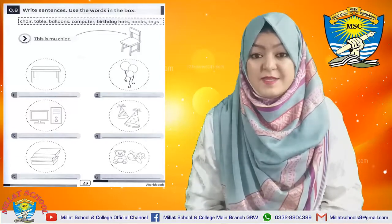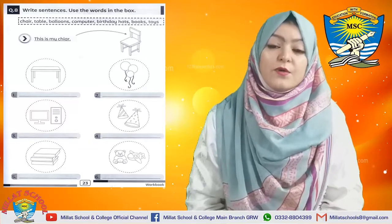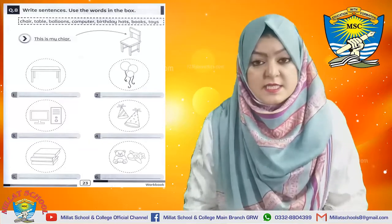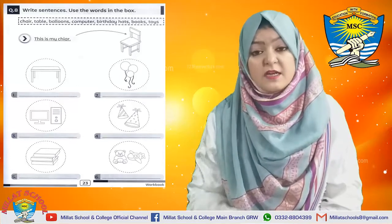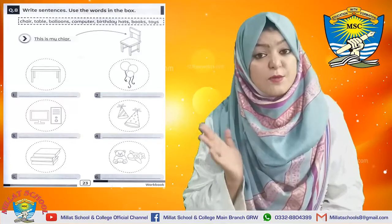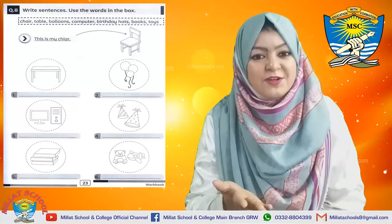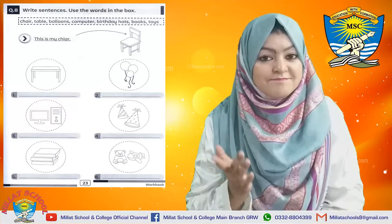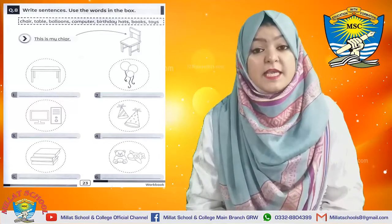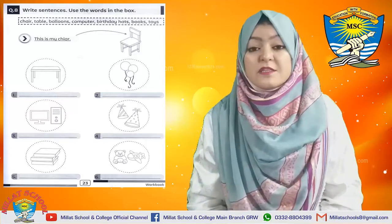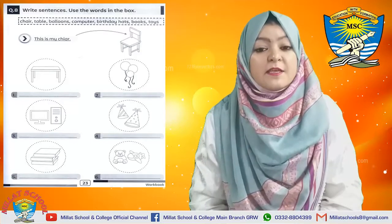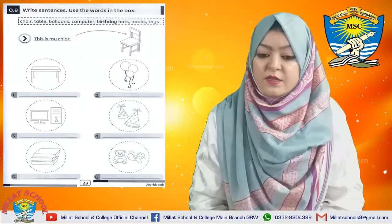Come to sentence number 2. Picture number 2 is about balloons. You will write 'These are balloons.' You can also write 'These are red balloons' and then color it with a nice color. You can mention any color you like and also fill in the color. Make your own creative sentence!